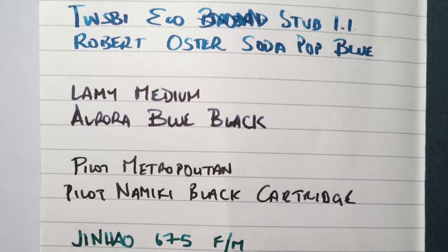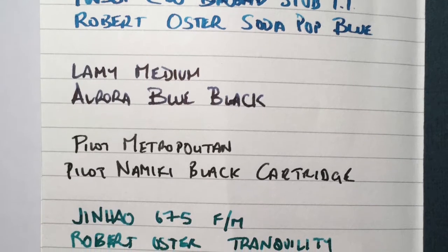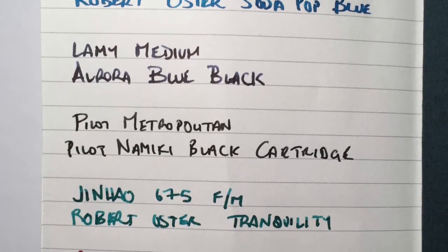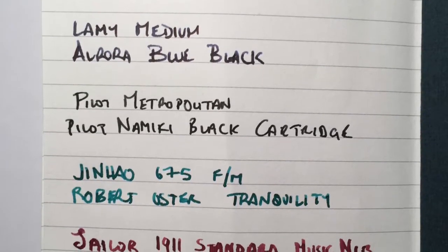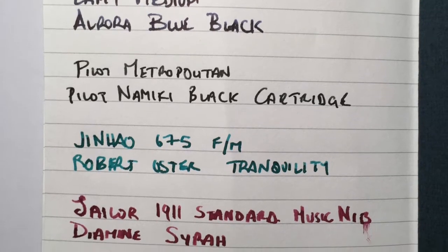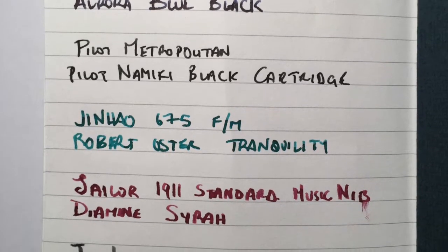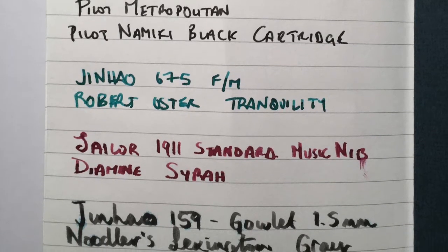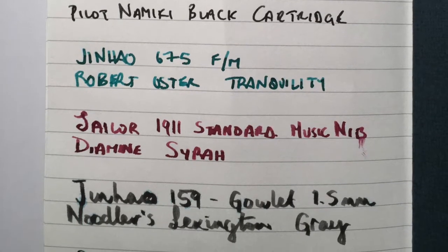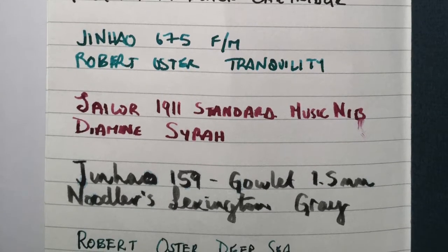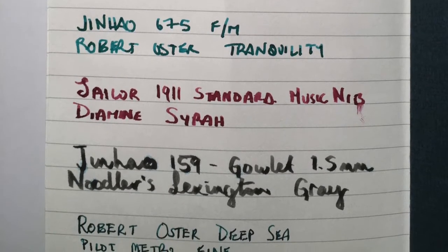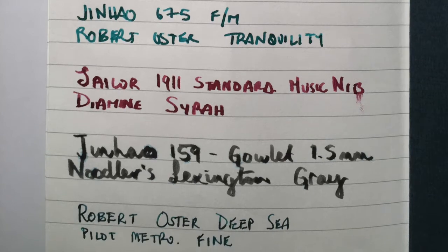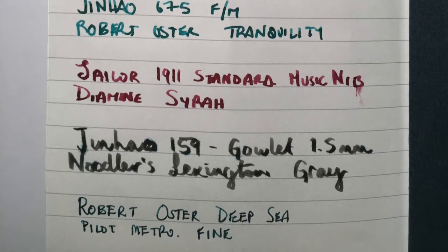Jinhao 675 with Robert Oster Tranquility—that's a cross between a medium and a fine but quite a nice wet writer allowing for some lovely shading. A Sailor 1911 Standard with a music nib, nice and broad and wet with Diamine Syrah. Then a Jinhao 159 with a Goulet 1.5 millimeter nib with Noodler's Lexington Grey, and finished with Robert Oster Deep Sea in a Pilot Metropolitan with a fine nib.